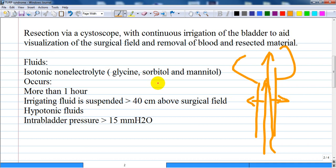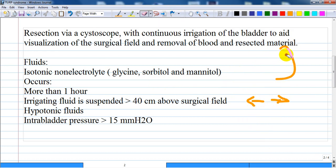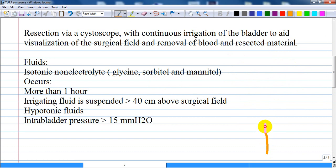This can cause volume overload and hyponatremia by dilutional effect. To be clear, when you are infusing through the urethra into the prostate portion and bladder.